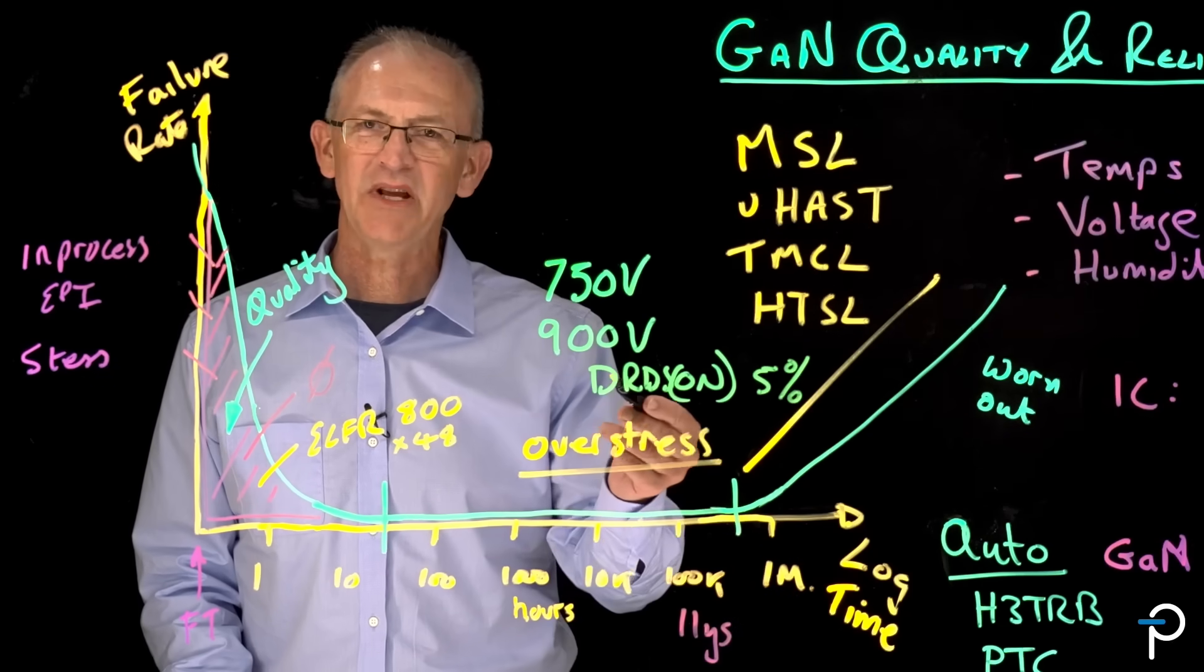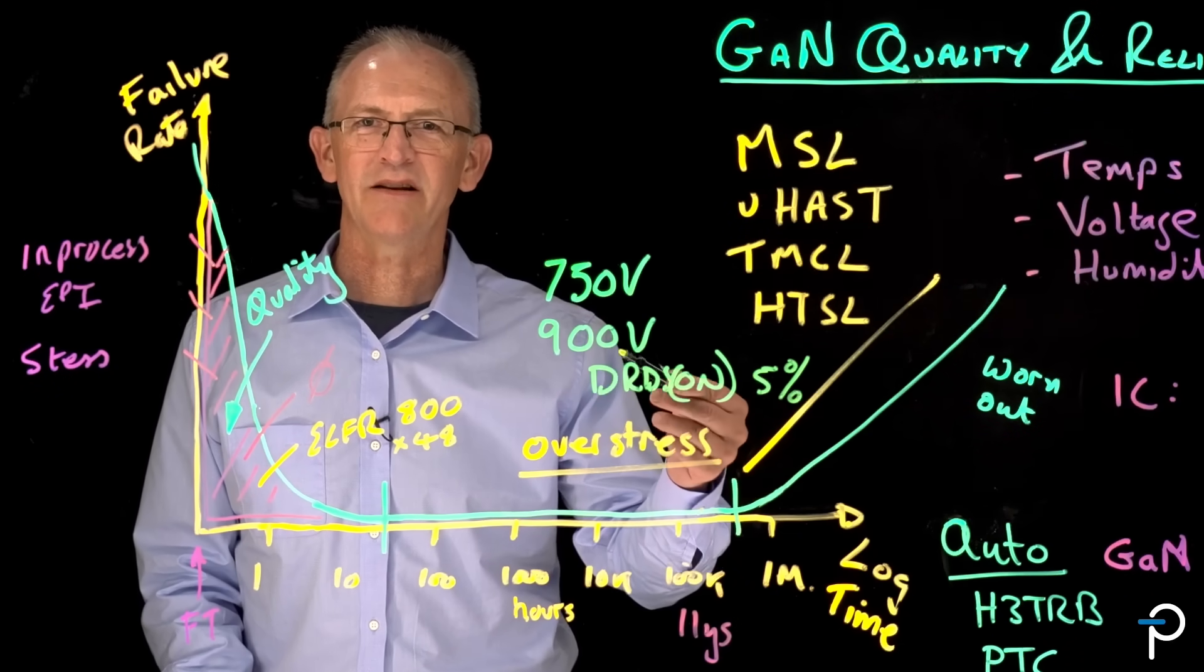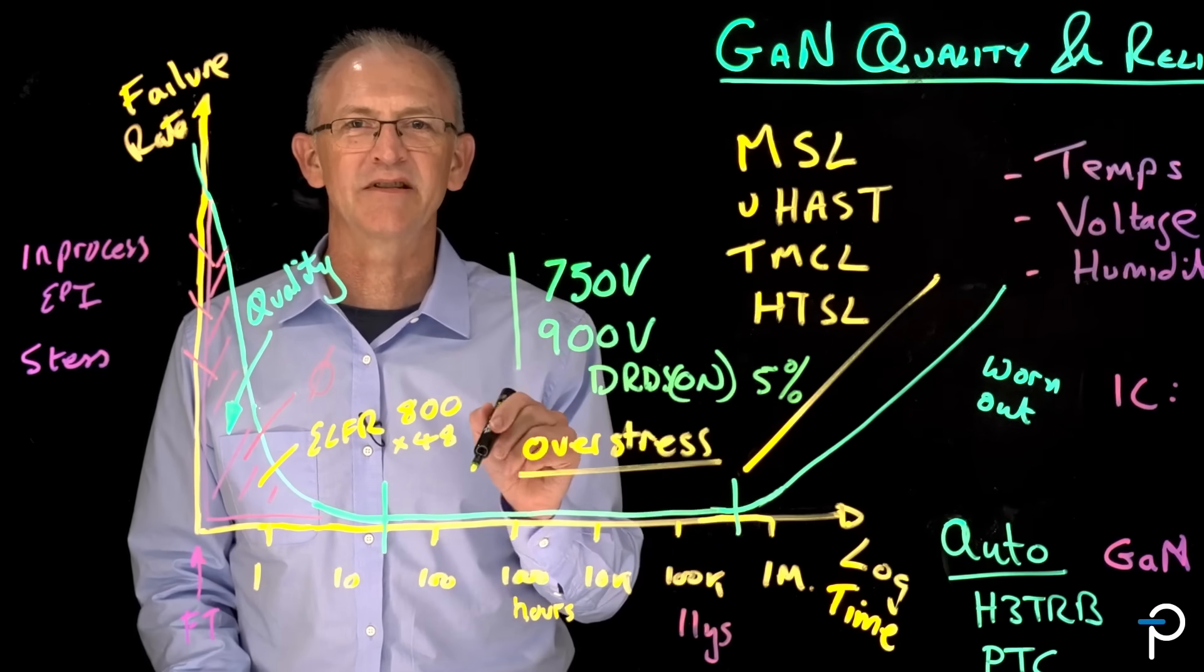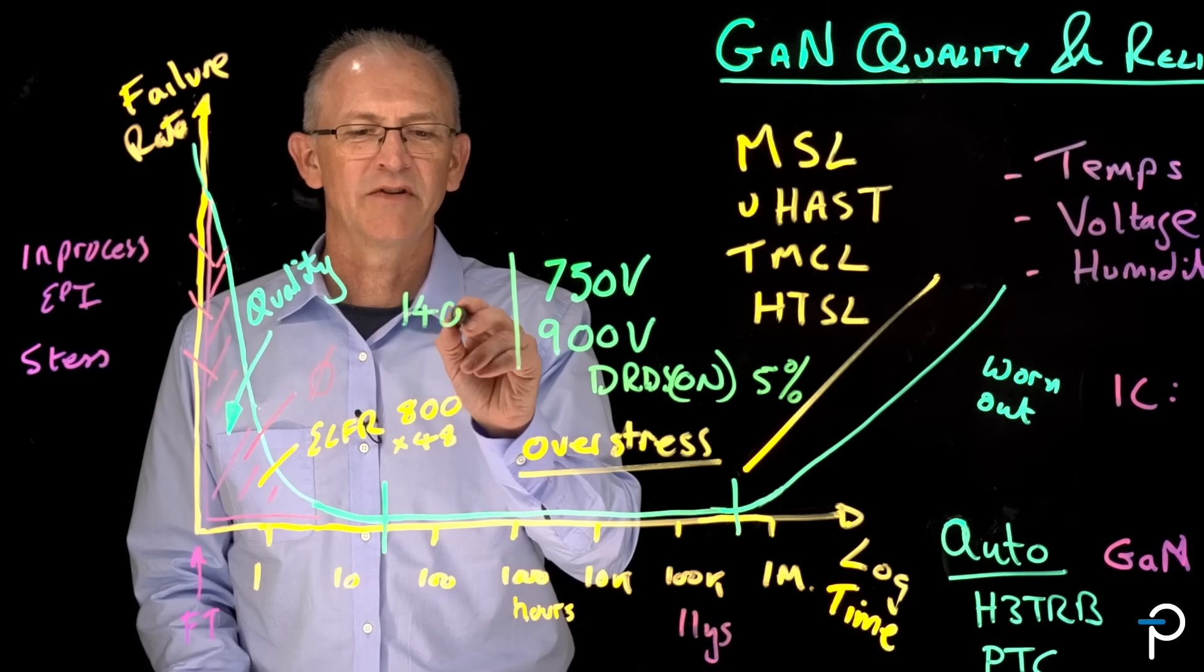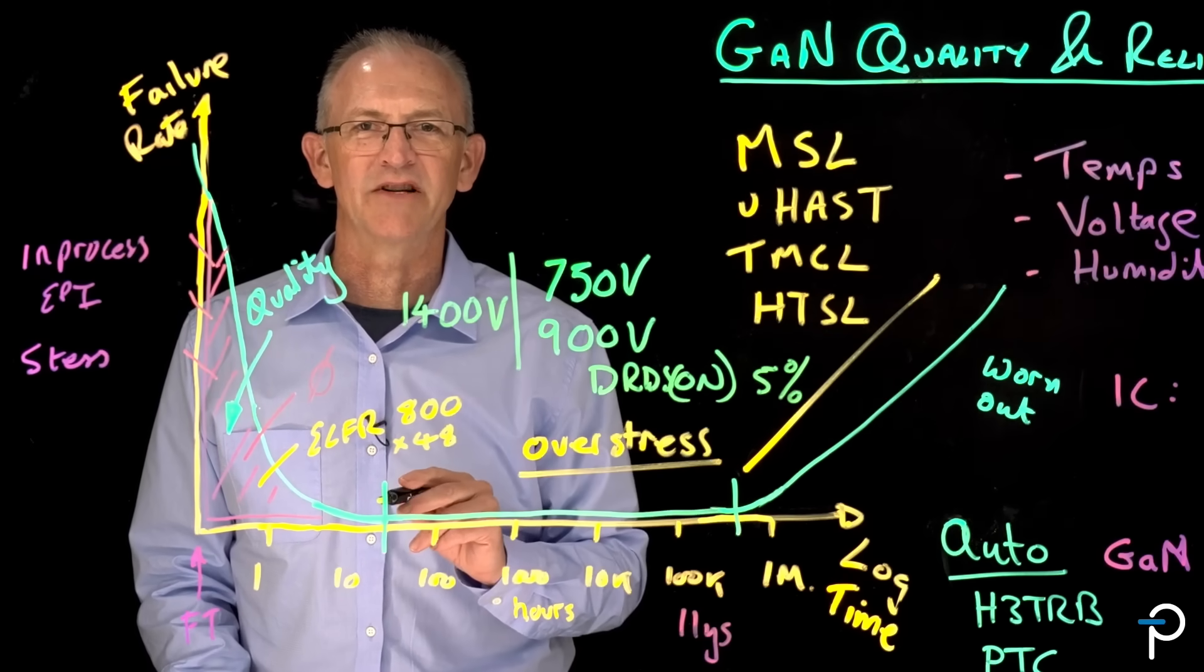So if our BV is being set by dynamic RDS-ON, where does it break down? There's got to be a number. And it turns out that for both of these GaN families, the actual physical breakdown is somewhere around 1400 volts.